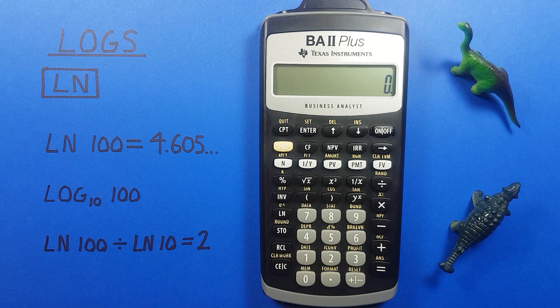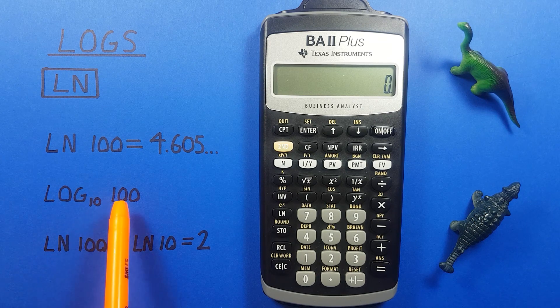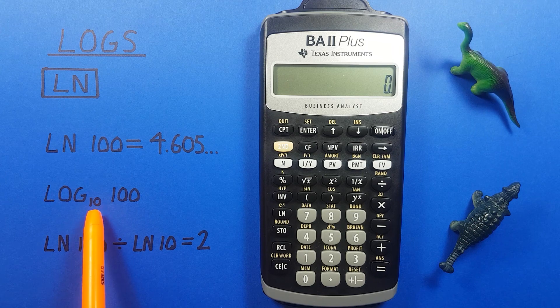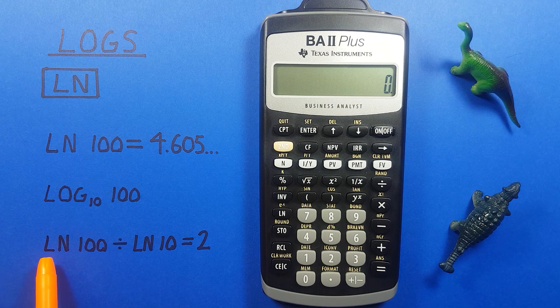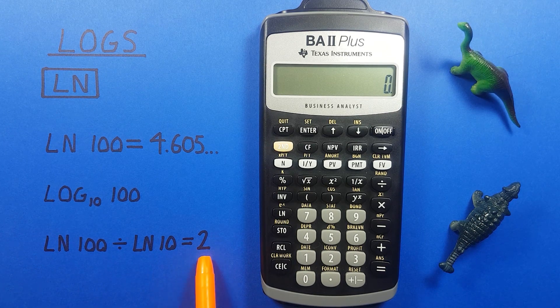Well, to do that we can use the change of base formula, where you divide the log of the number you're looking for by the log of the base you want to use. You can use natural log in this case. So for our example, we would use LN 100 divided by LN 10, which should give us 2.